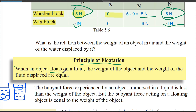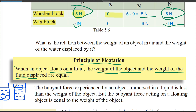This concept is called the Principle of Flotation. When an object floats on a fluid, the weight of the object and the weight of the fluid displaced are equal. That is the weight of the object equals the weight of the fluid displaced — that is the Principle of Flotation.